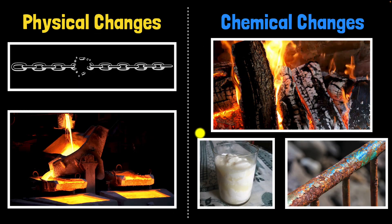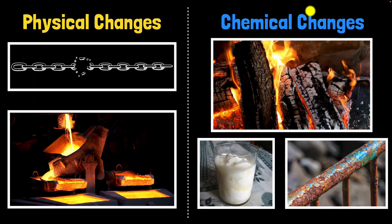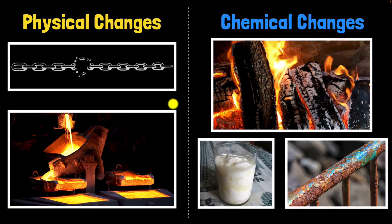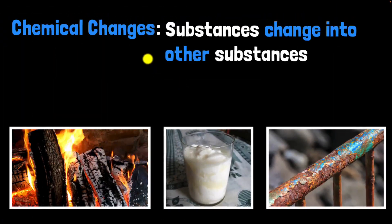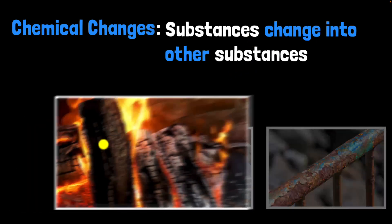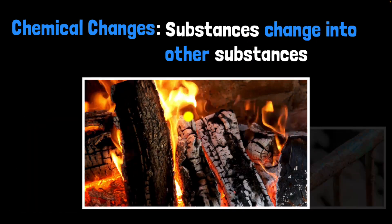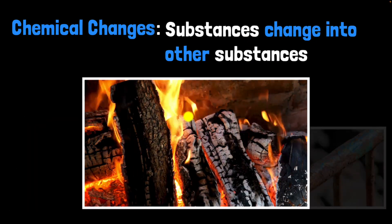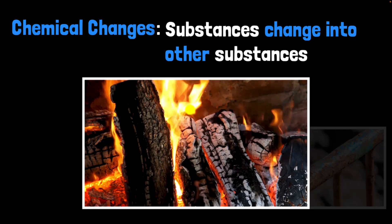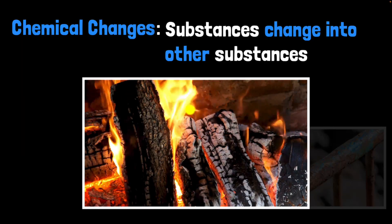What is so different about chemical changes? Chemical changes are when substances change into other substances altogether. For example, when you burn wood, you get ashes, which is a different substance — it's not wood. It's a new substance that's been created.